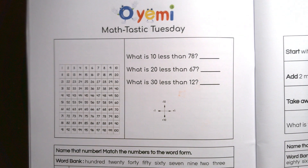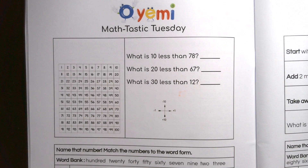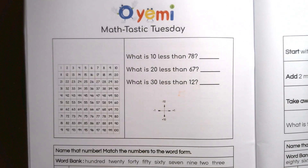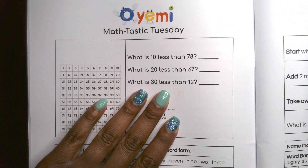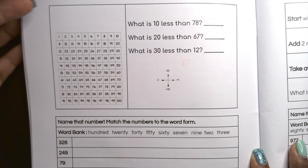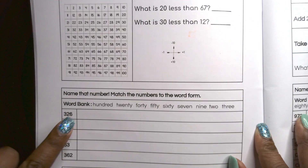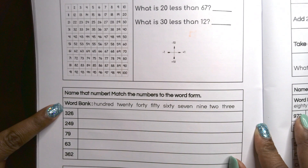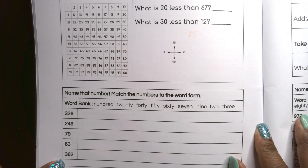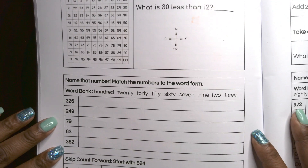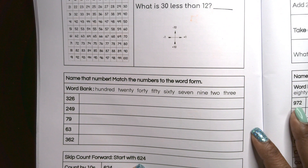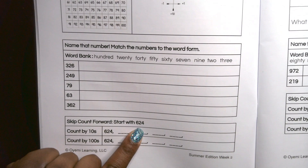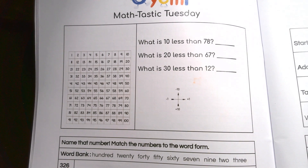Hello there, my budding geniuses, and welcome to a Math-Tastic Tuesday! We are going to practice less than with our hundreds chart, use our word bank to match vocabulary to name the number, and then skip count forward starting with 624 — skip counting by tens and also by hundreds. Let's get started.